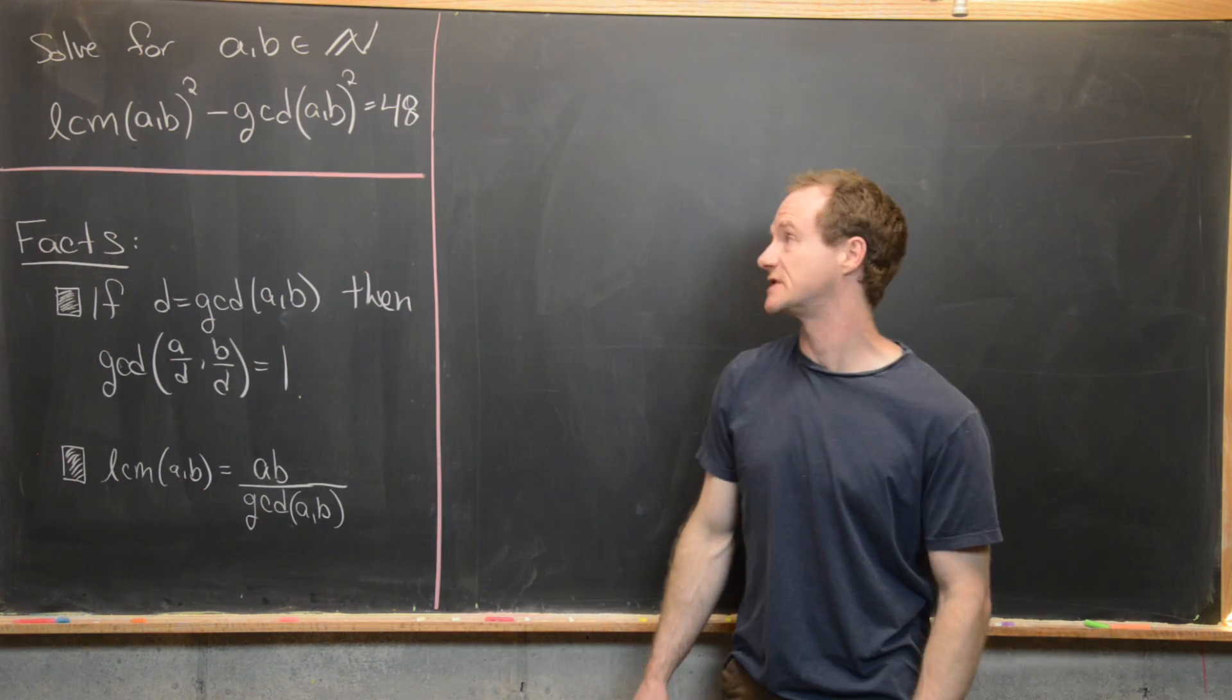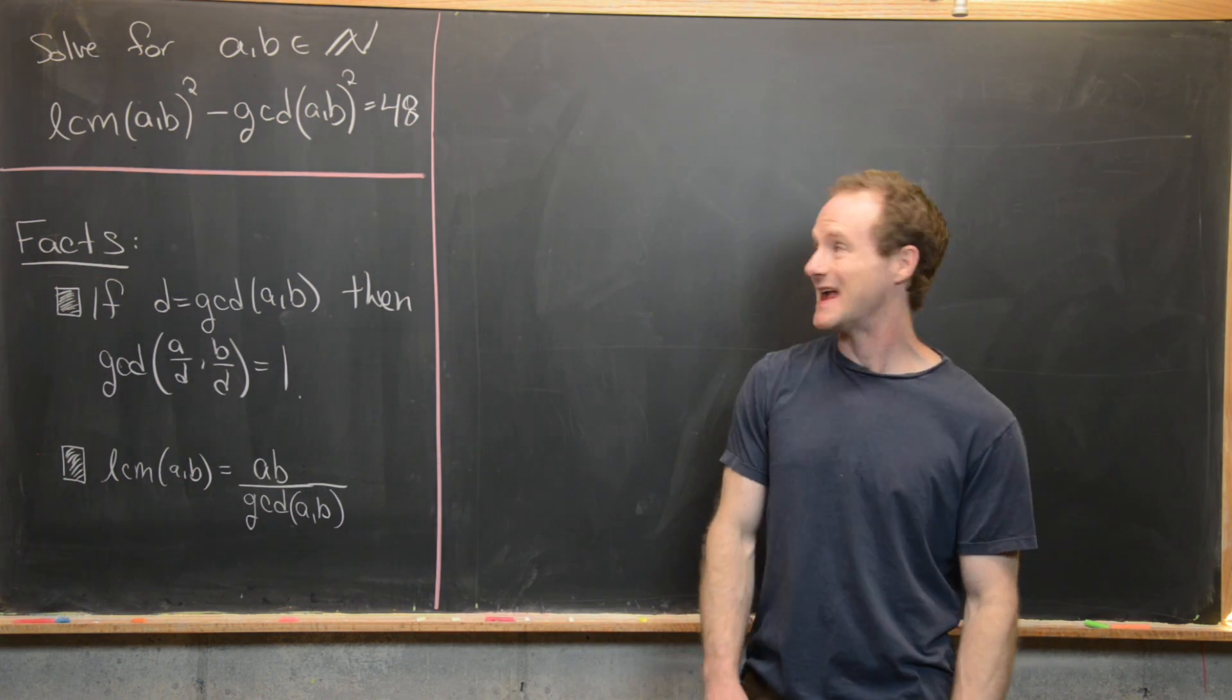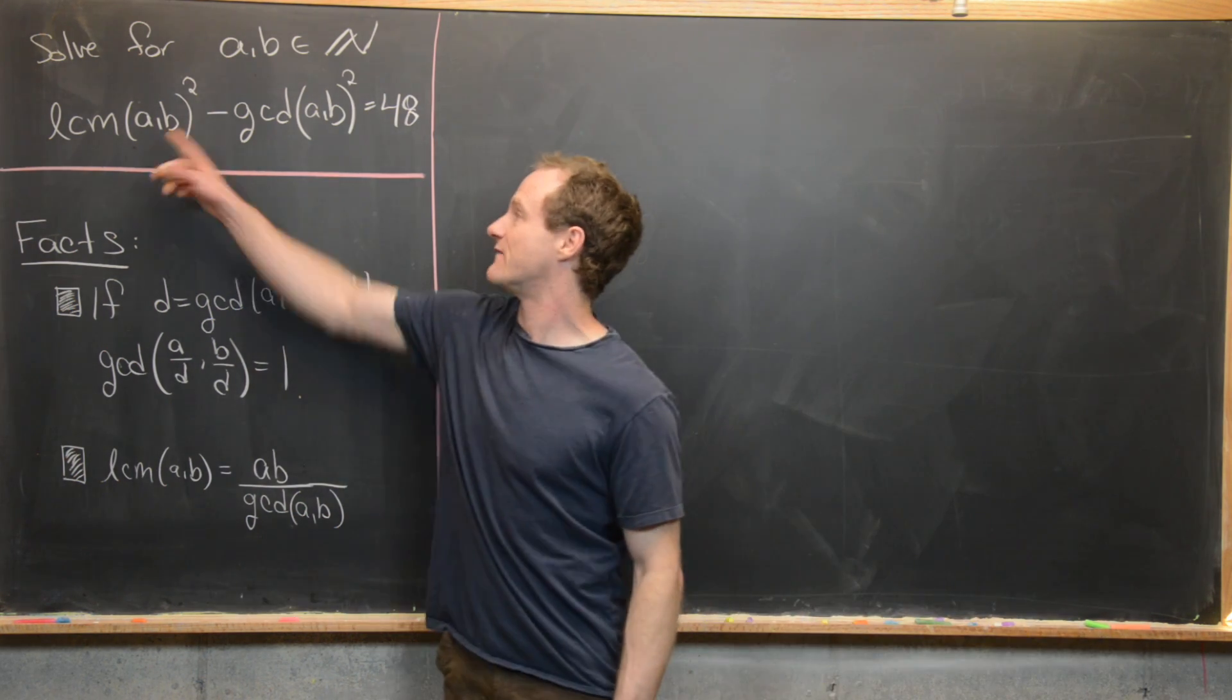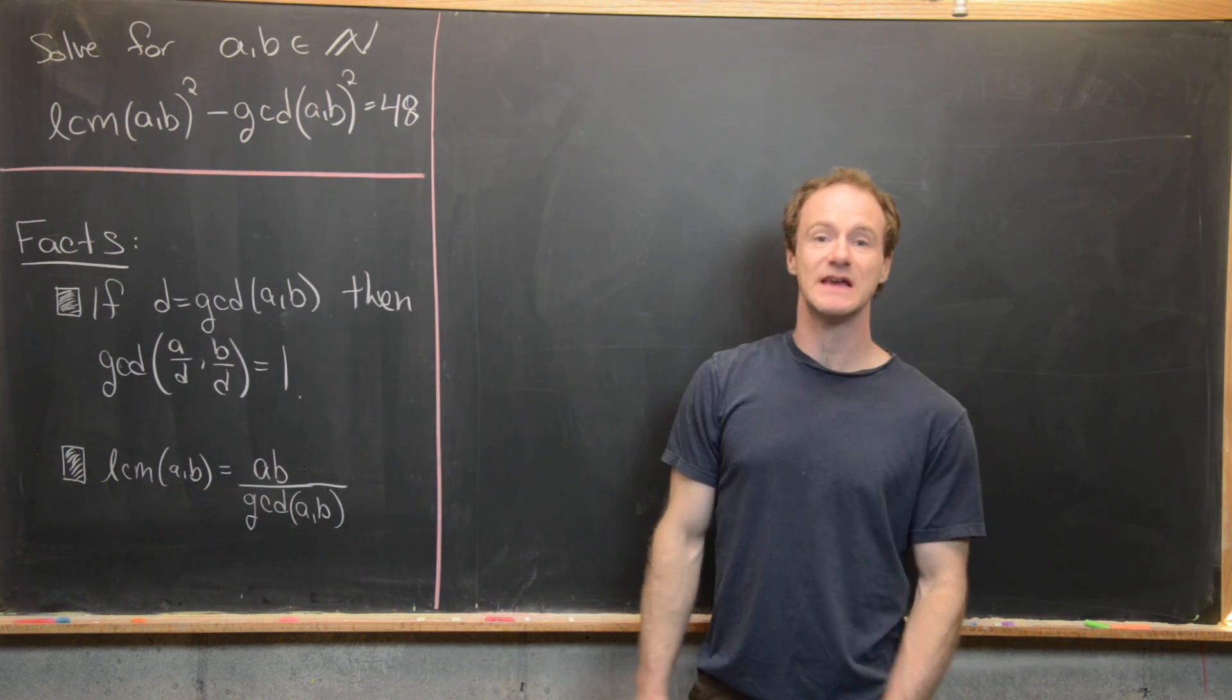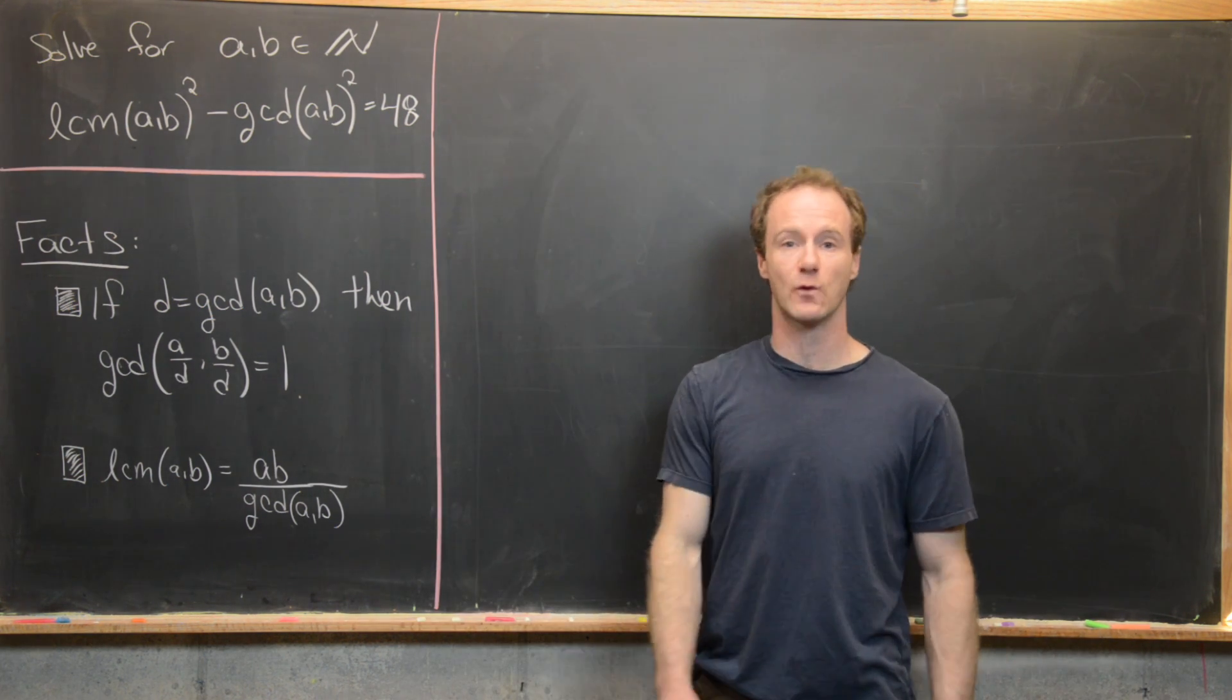Here we're going to look at what I think is a pretty interesting equation. So we want to solve for all natural numbers A and B that satisfy the following equation. We have the LCM of AB squared minus the GCD of A and B squared is equal to 48.